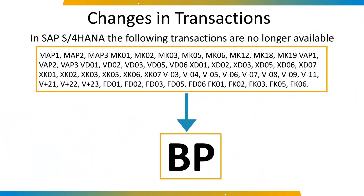In SAP S4HANA, the following transaction codes are no longer available; we can use the BP transaction code instead of those. The transactions VDH1N and VDH2N to maintain customer hierarchies are still available. The transactions XD99, XK99, and MASS for mass maintenance are also still available in SAP S4HANA.